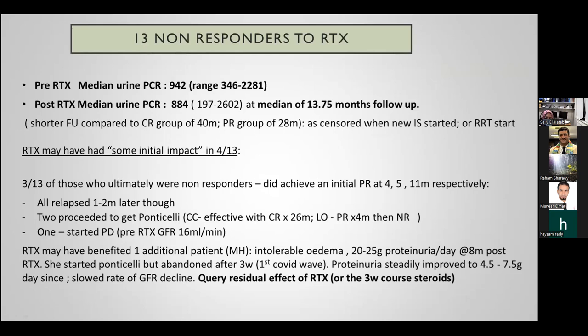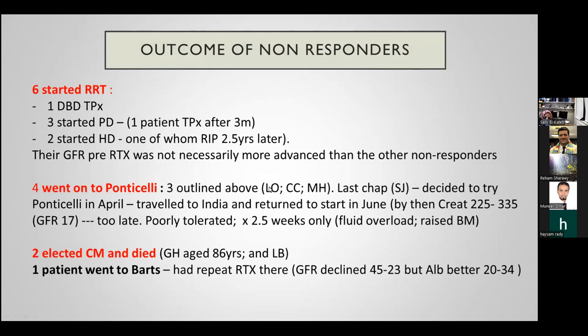Non-responders generally did very badly, which is unsurprising. Pre- and post-rituximab PCRs remained in the nephrotic range, as the treatment simply did not work. Whether we should have re-dosed these patients with rituximab remains questionable. Six patients ended up on renal replacement therapy. Four went on to try Ponticelli, and interestingly Ponticelli worked for some who had not responded to rituximab. Sadly, two patients opted for conservative management only and died.